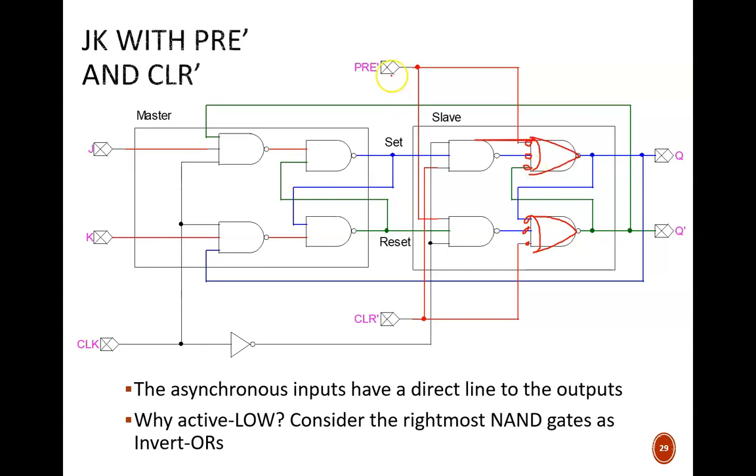When preset is activated with a zero signal, this invert-OR is guaranteed to output one, regardless of what any of its other inputs are. So, Q becomes one, no matter what the clock is doing or any of the other signals.